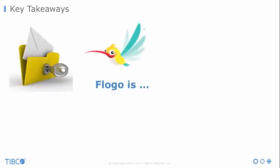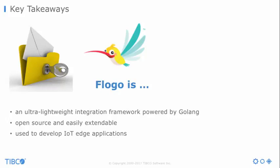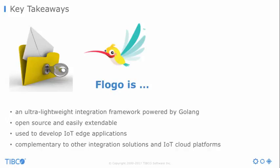So what is FLOGO? Let's begin with the key takeaways of this open source project. It is an ultra-lightweight integration framework powered by the Go programming language, especially for IoT scenarios where you need lightweight integration services. It is open source with a very permissive license, and it is easily extendable. It is used especially for IoT edge applications, but you can also use it for building lightweight microservices or even serverless applications. It is complementary to other integration solutions and IoT cloud platforms — at the end I will show how to use it together with AWS or Google's IoT platform.